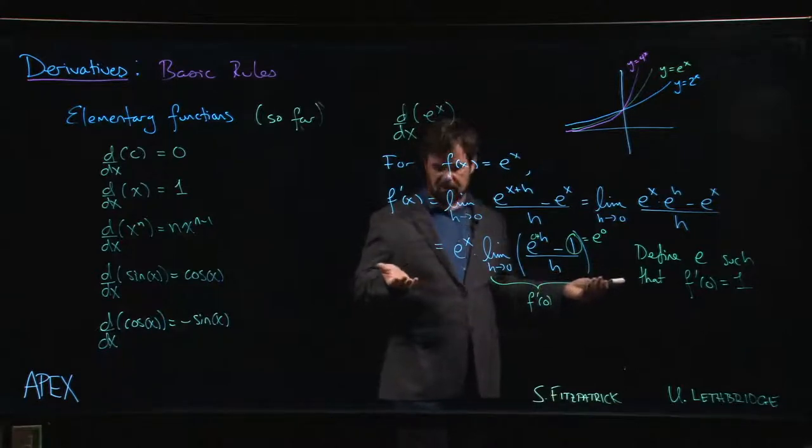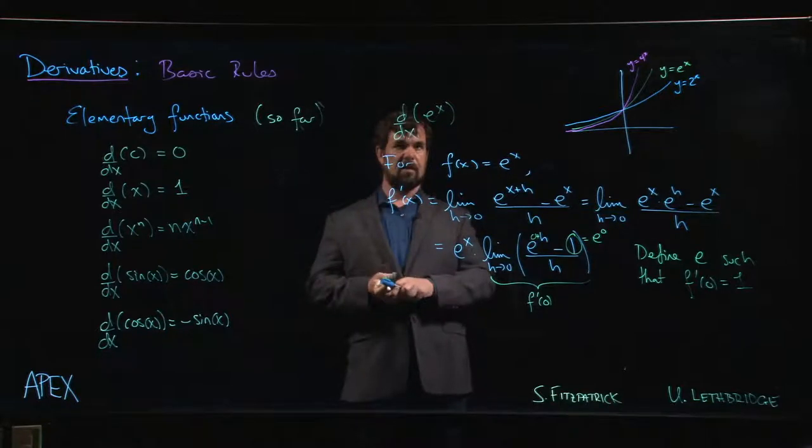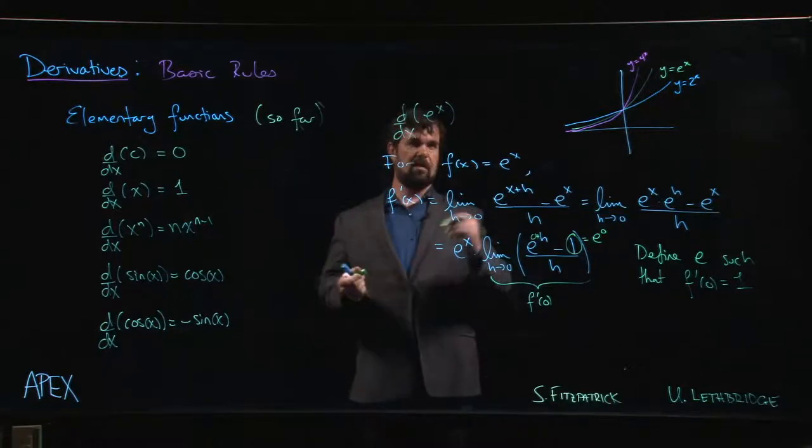We'll say, okay, good enough for now. F prime of 0 is 1. And that means that f prime of x is e to the x.